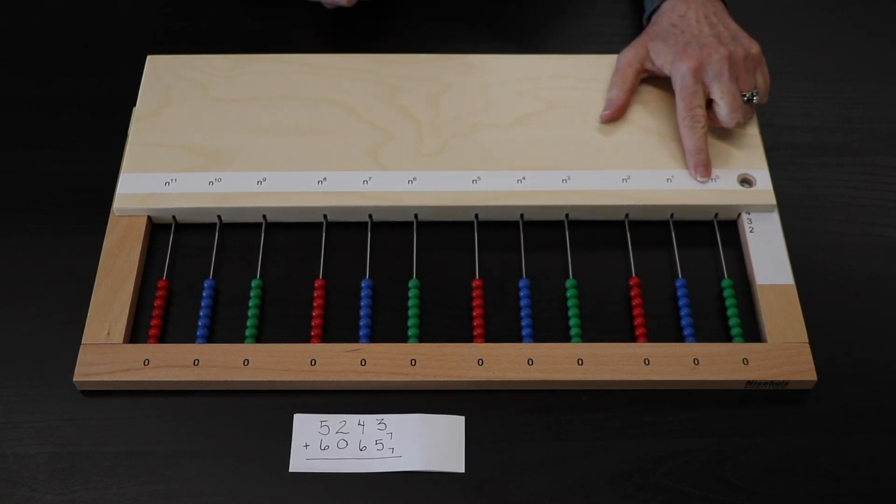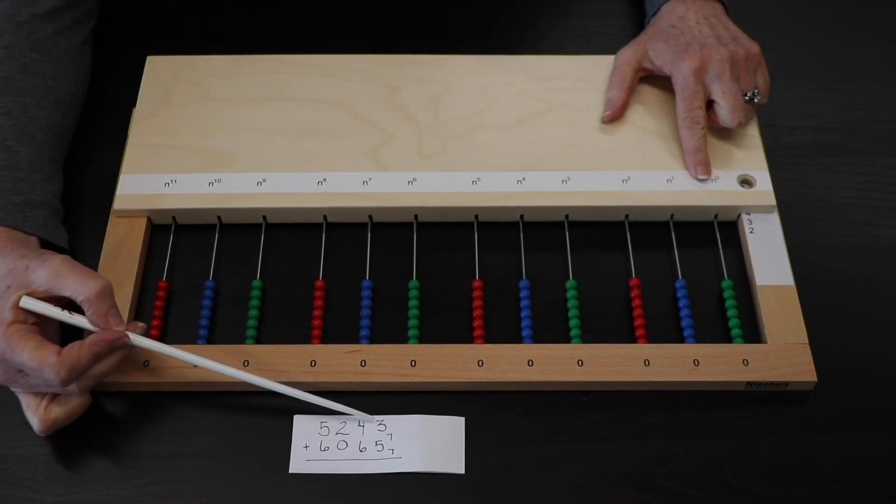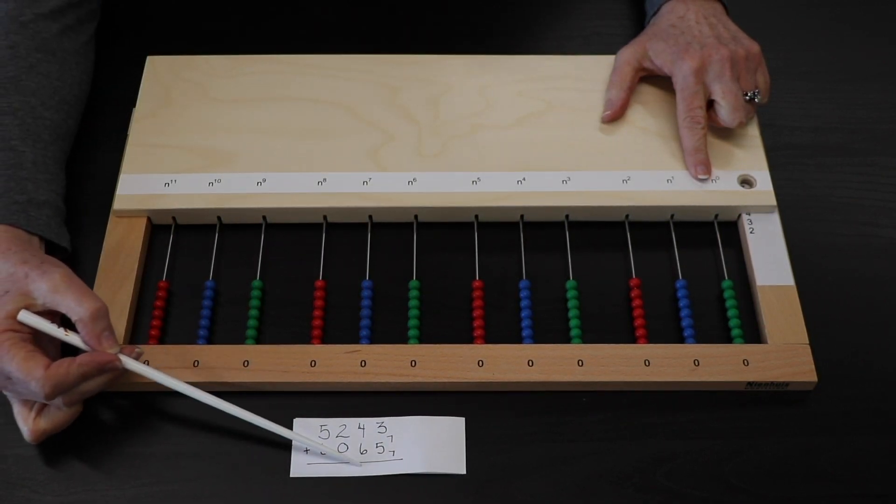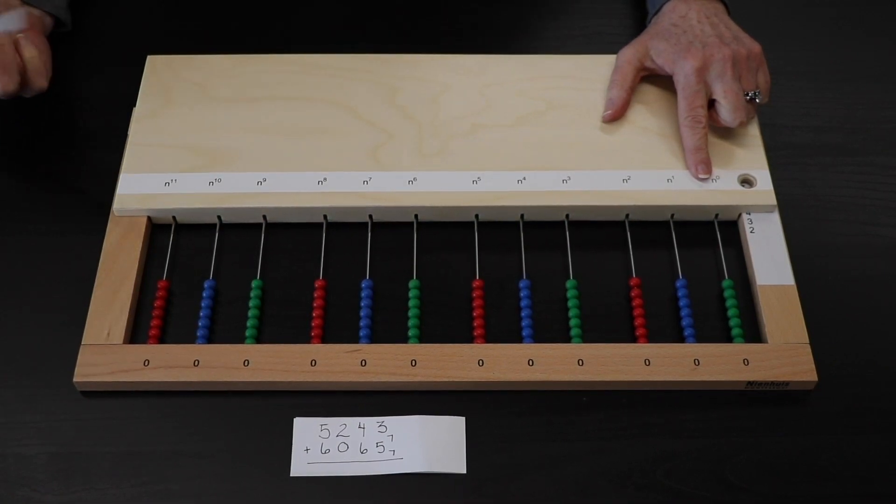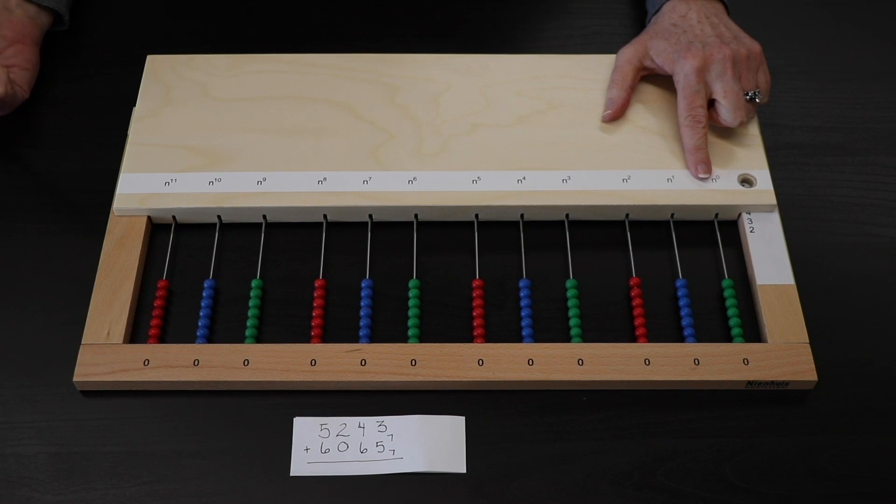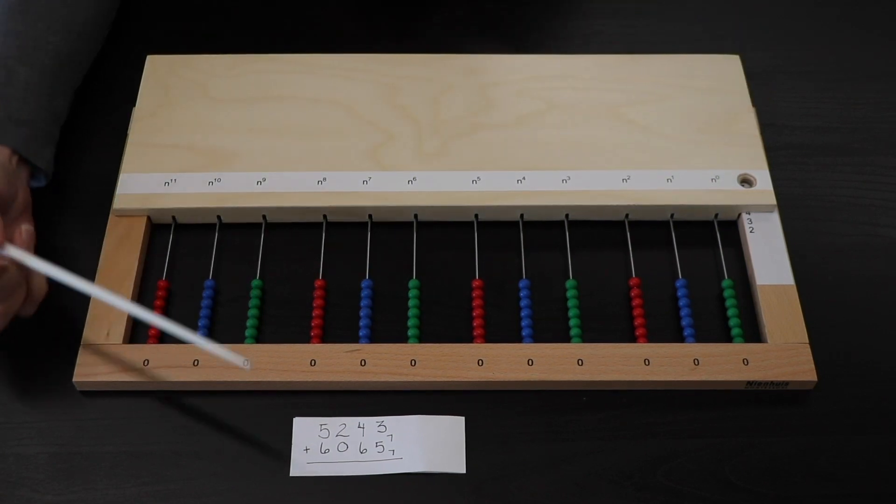Because I'm a sixth grader, I already know that I can add my columns together. So I don't place the whole first addend and then the second. Although, if a child does need that additional step, you can modify the presentation.